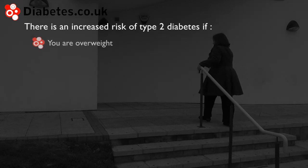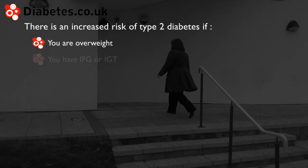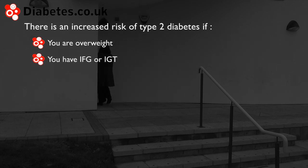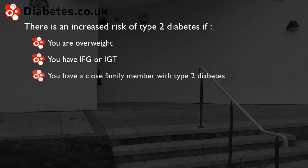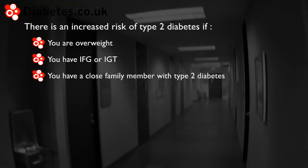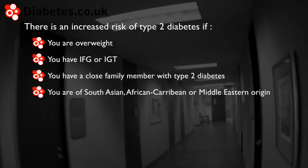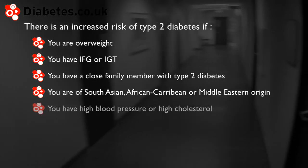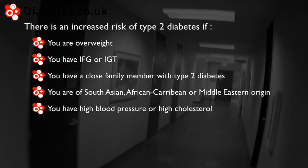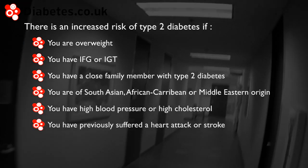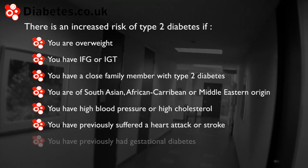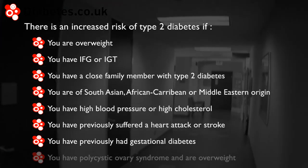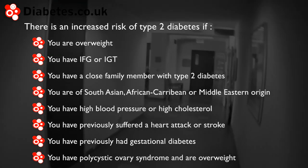Being overweight or obese. If you have impaired fasting glucose or impaired glucose tolerance. Having a close family member with type 2 diabetes. If you are of South Asian, African Caribbean or Middle Eastern origin. If you have high blood pressure or high cholesterol. If you have previously suffered a heart attack or stroke. If you have previously had gestational diabetes. If you have polycystic ovary syndrome and are overweight.